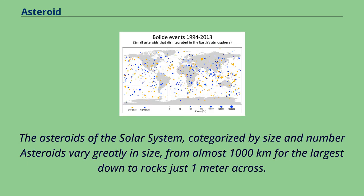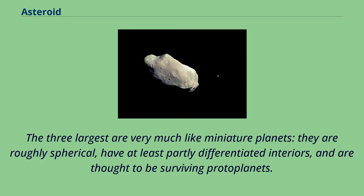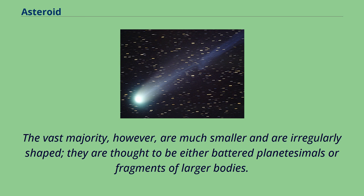Asteroids vary greatly in size, from almost 1,000 kilometers for the largest down to rocks just one meter across. The three largest are very much like miniature planets: they are roughly spherical, have at least partly differentiated interiors, and are thought to be surviving protoplanets. The vast majority, however, are much smaller and irregularly shaped, and are thought to be either battered planetesimals or fragments of larger bodies.